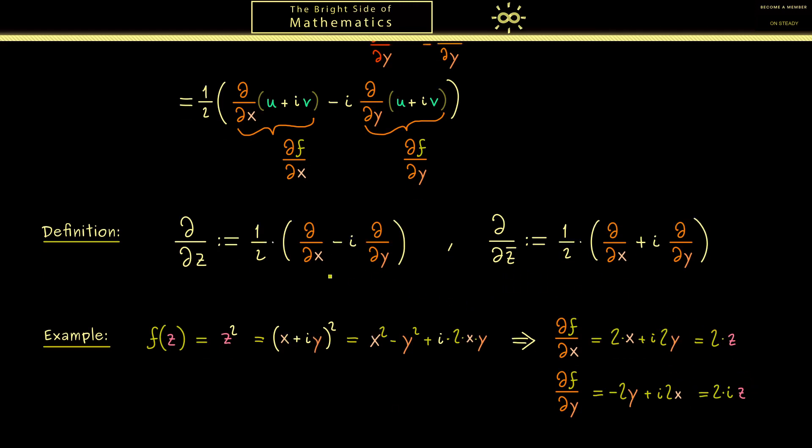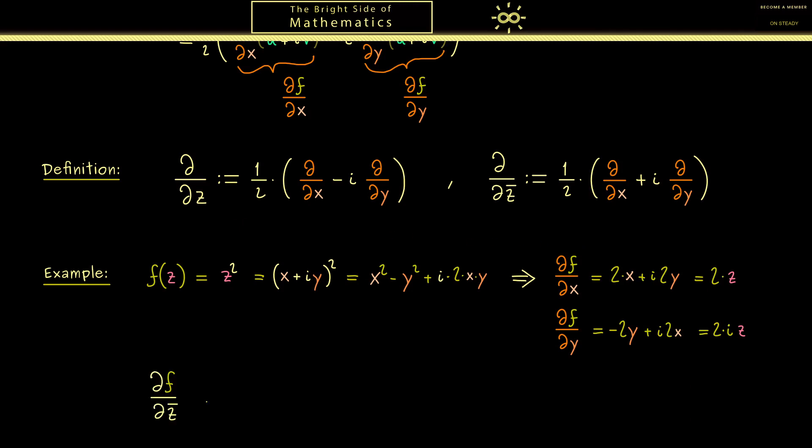Hence df/dx is simply 2 times z. And in a similar way you see for df/dy we have 2 times i times z. So we can always use that i² is minus 1. Now with these two nice short expressions we should be able to calculate the two Wirtinger derivatives. So let's start with the second one ∂f/∂z̄. It's 1/2 times (2z plus i times 2iz). Again we know i² is minus 1 so we get 0 here. This is what we expected because the polynomial is a holomorphic function.